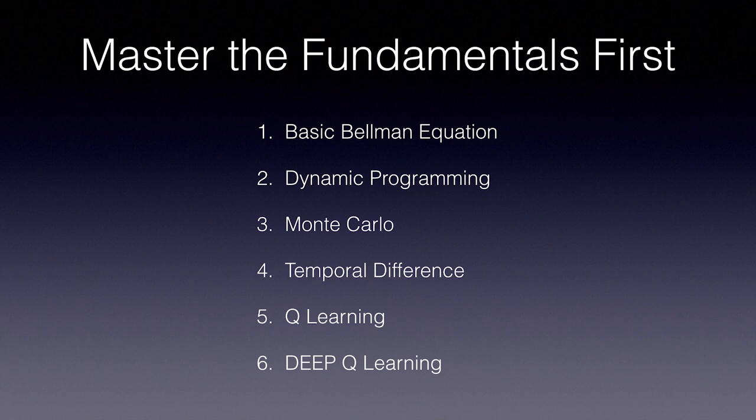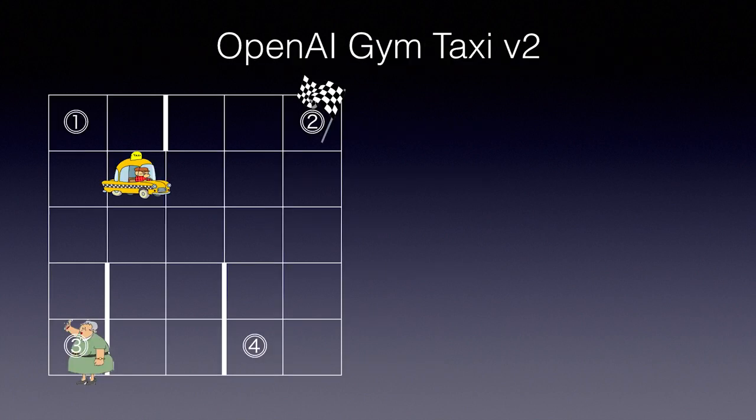So without further ado, let's take a look at the challenge we're going to be solving. Welcome to OpenAI Gym taxi version 2. We're going to be dispatching a taxi to pick up a passenger who must be dropped off in the designated location as quickly as possible.